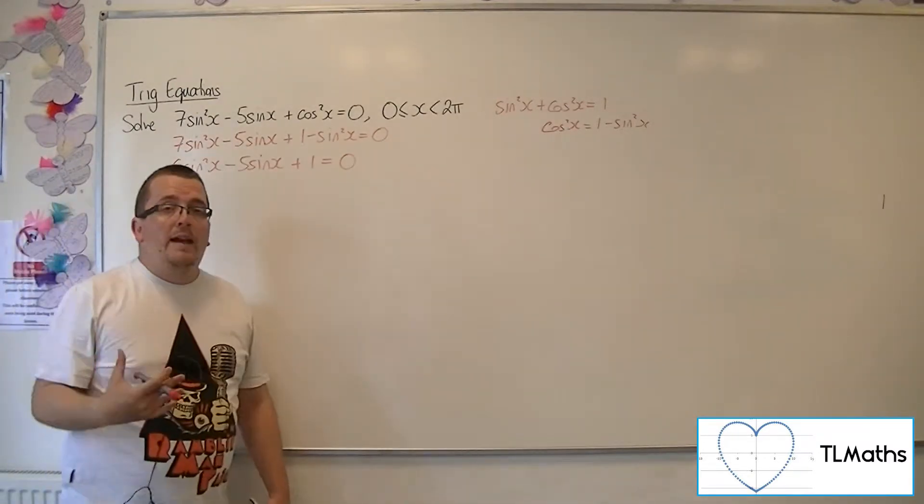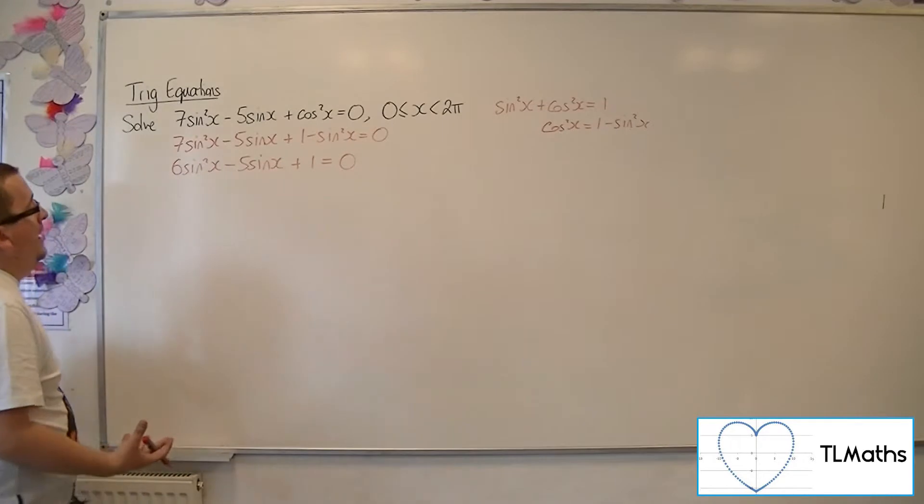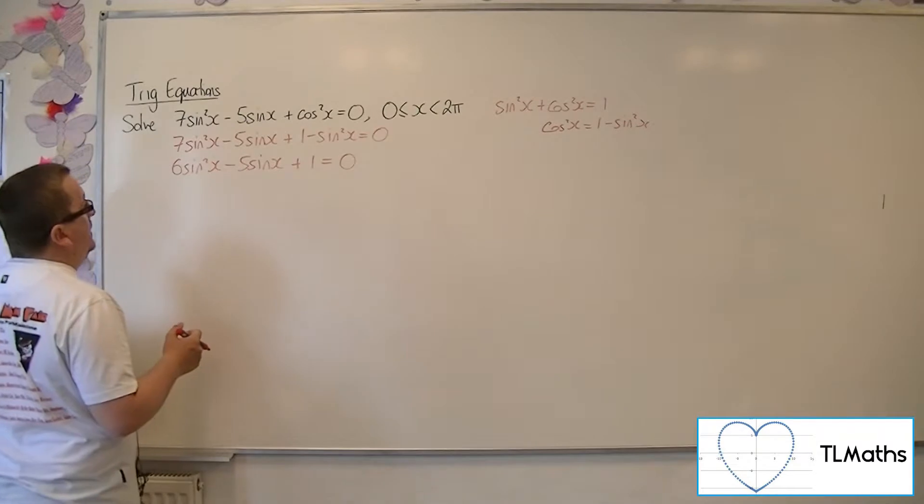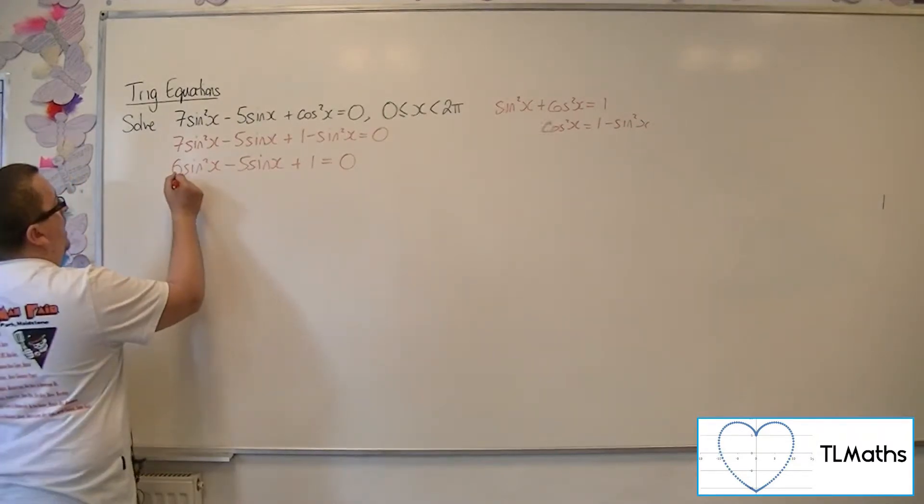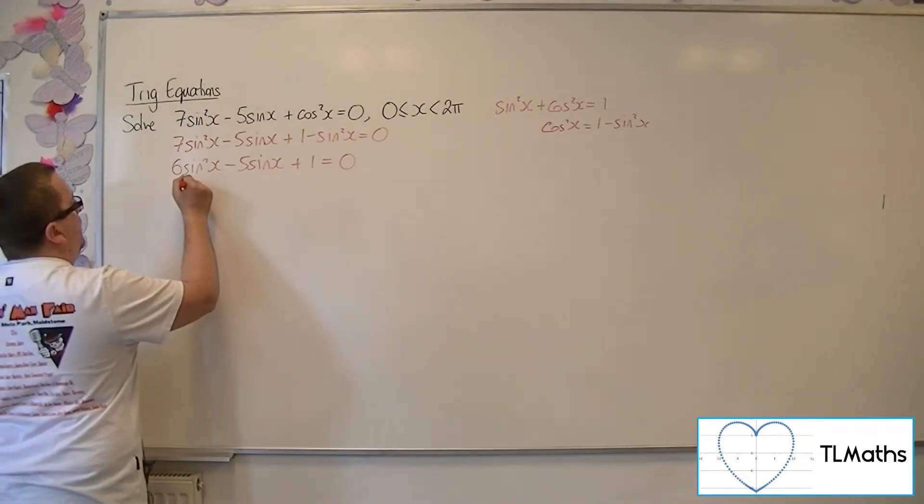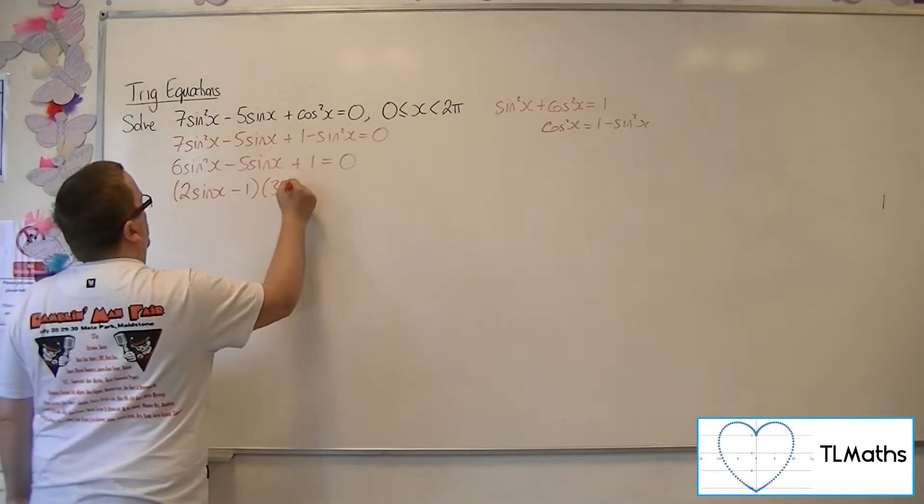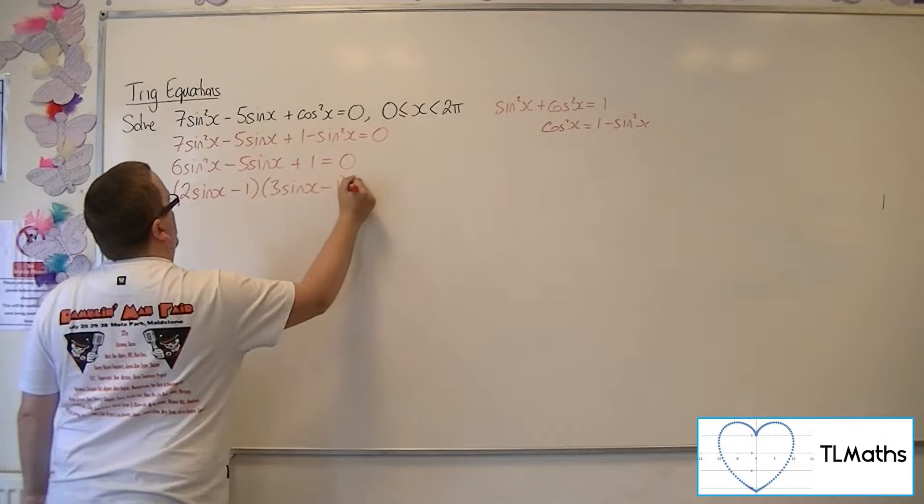You can use the quadratic formula or your calculator to solve this quadratic. This one factorizes to (2sinx - 1)(3sinx - 1) = 0.